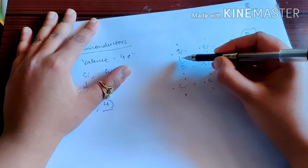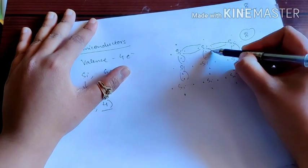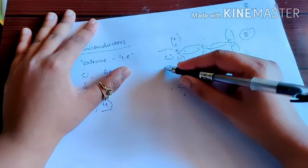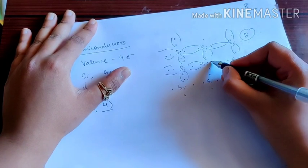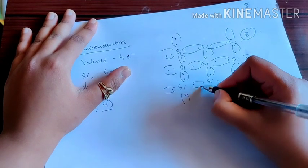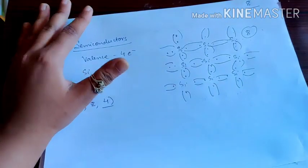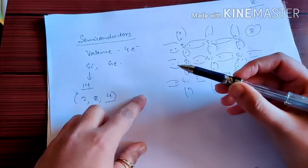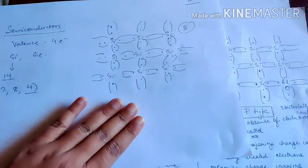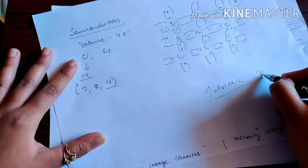But silicon needs 8 electrons to be stable. So these will be shared with nearby silicon atoms — 1, 2, 3, 4, 5, 6, 7, 8. For each silicon you will find 8 electrons. This lattice structure is formed. This silicon is a semiconductor — an intrinsic semiconductor, meaning it is a pure semiconductor.